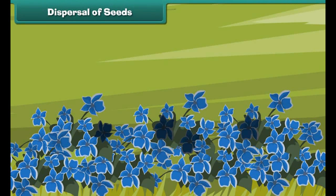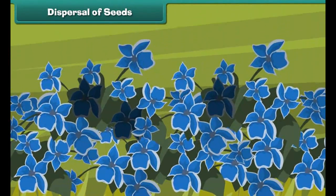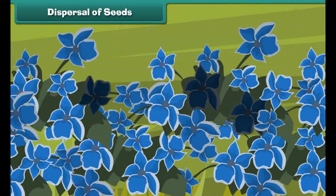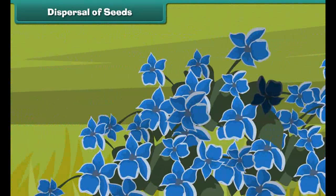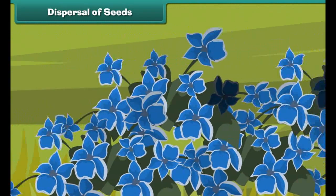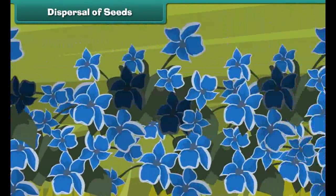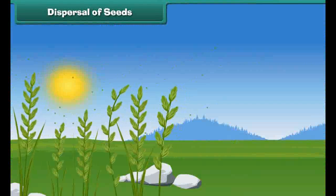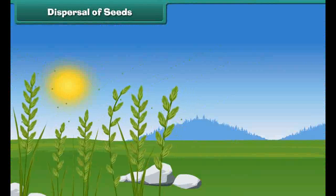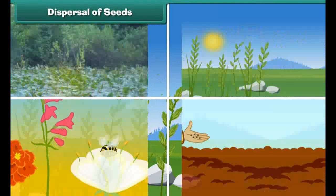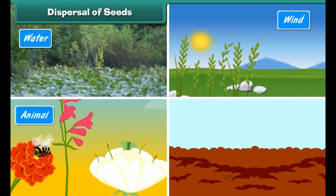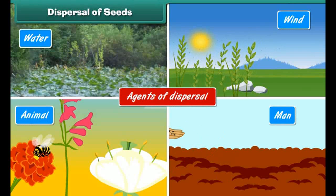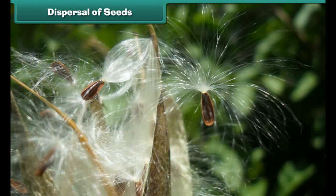Dispersal of seeds: If all the seeds grew near the parent plants, there would certainly be a shortage of space, water, minerals, and sunlight, so most plants would not grow properly and would naturally die. It is therefore necessary that seeds be scattered over large distances. Nature has arranged methods of seed dispersal in many ways — by water, wind, animals, and even man — and these are known as agents of dispersal.